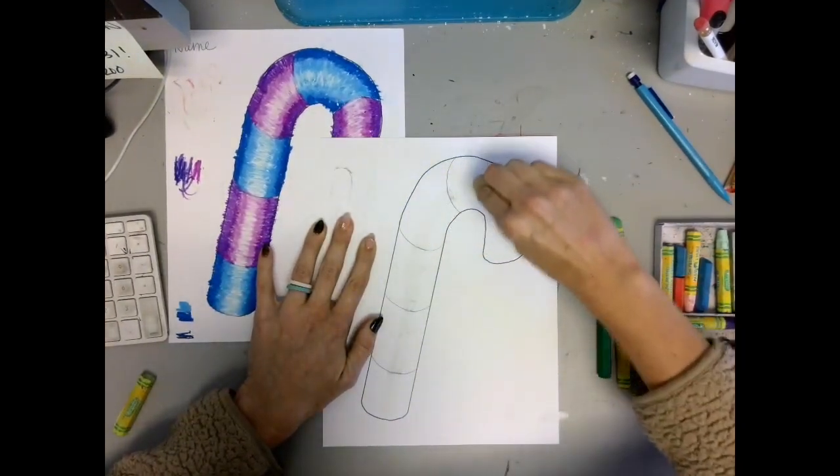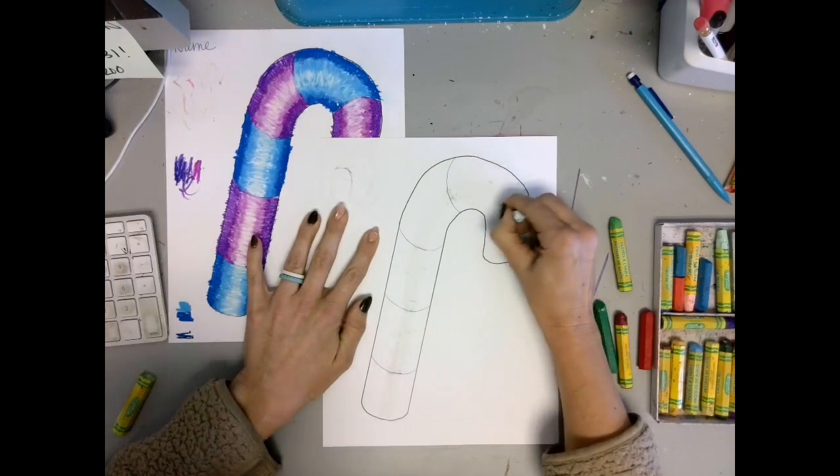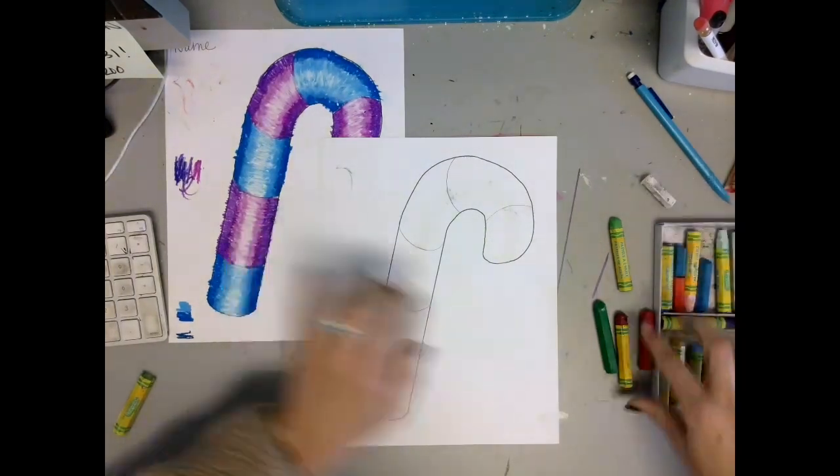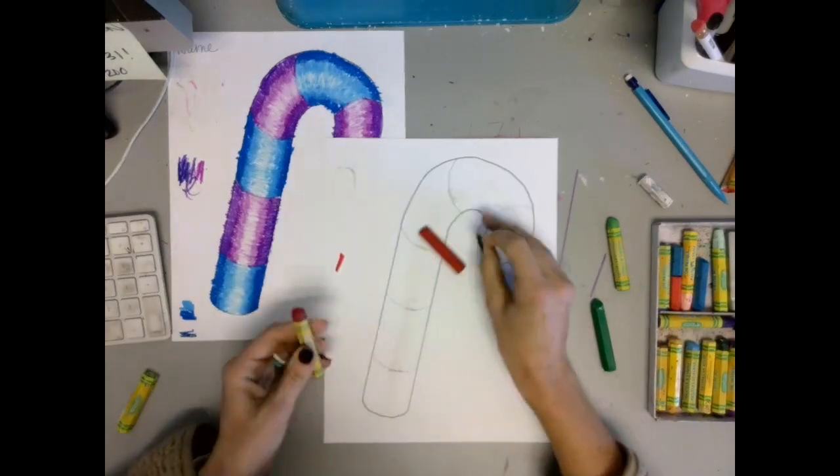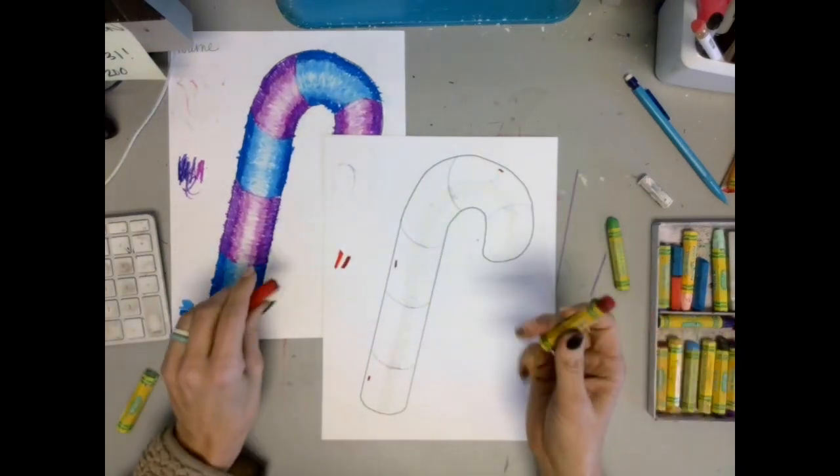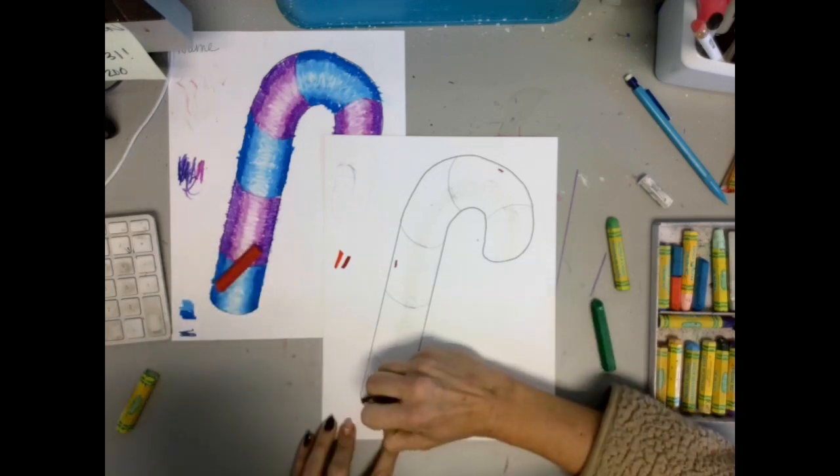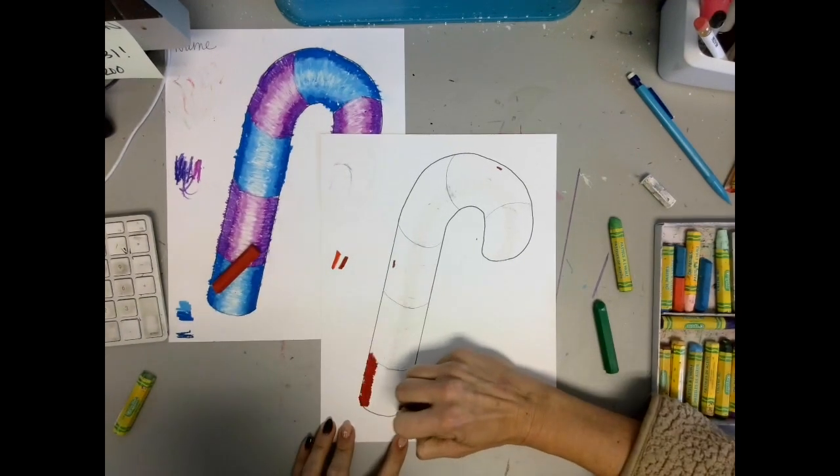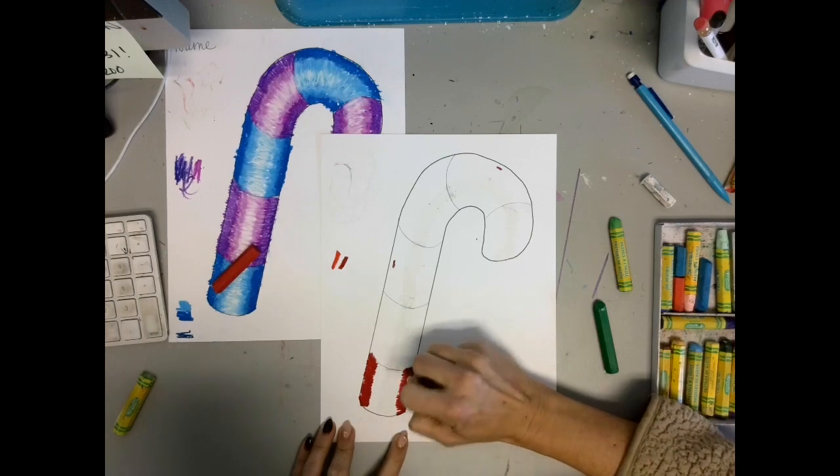After that you chose one color in two different shades. So here I'm showing you a dark red and a light red. Start with the darkest shade first and make back and forth motions with your oil pastel along the outside of that section of the candy cane.